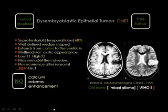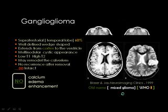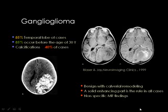Two main diagnostic criteria of DNET: number one is the lobulated outline, and number two is remodeling of the overlying calvarium — the calvarium is slightly indented. Since this tumor may produce no symptoms, it can be discovered at an older age. It appears as low signal on T1 and high signal on T2, and can be discriminated from cerebral infarction.